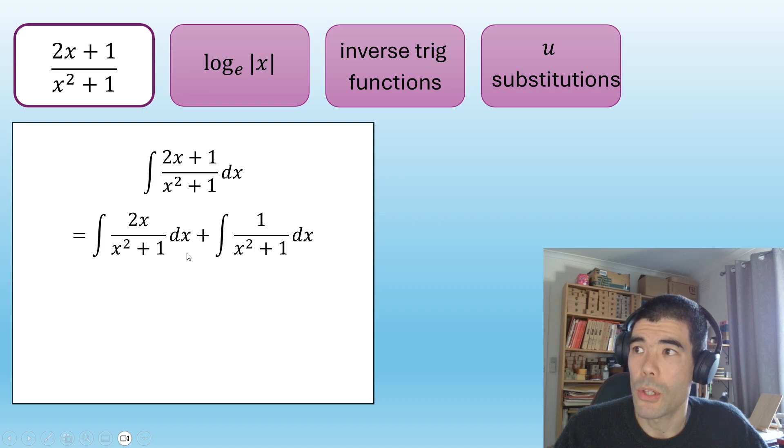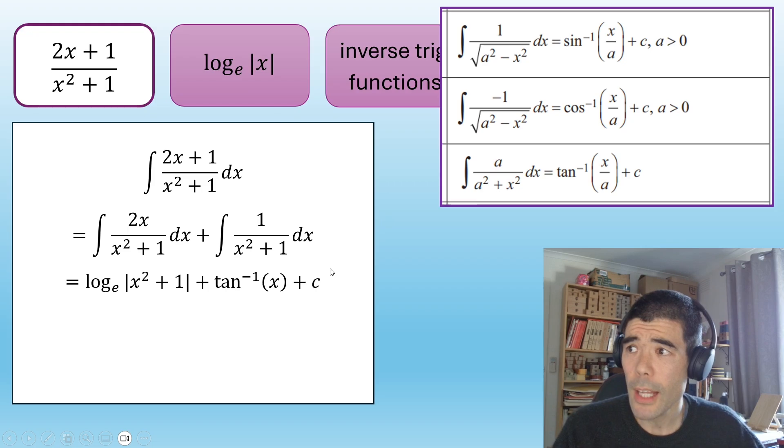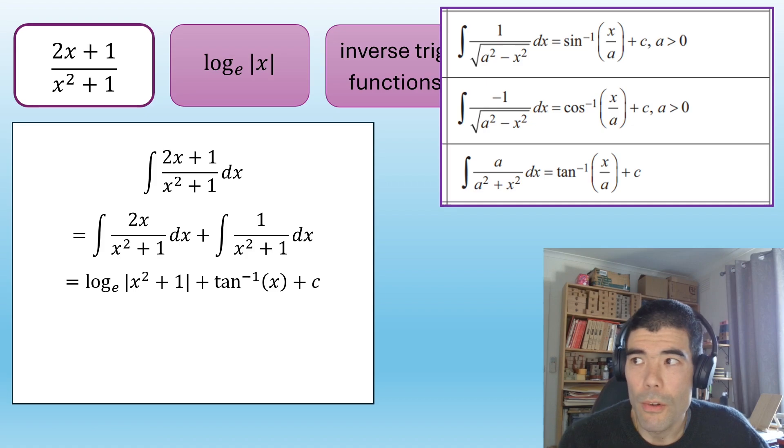Notice we couldn't use a u substitution straight off because the derivative of x squared plus 1 is 2x. So we can't sub out the whole 2x plus 1 for a multiple of du dx. This is why we split it up into the sum of two things. So this one, we can use a u substitution. It's actually going to be a natural logarithm. On the denominator there, we have x squared plus 1. So if we let that be u, we'll have integral of 1 over u du. It's just going to be log. For this integral, this is where we use an inverse trig function. So if we look at the formulas on your formula sheet and particularly that third one, hopefully we'll see this integral is none other than this case where a is equal to 1. Okay. So that integral is just going to be an inverse tan.